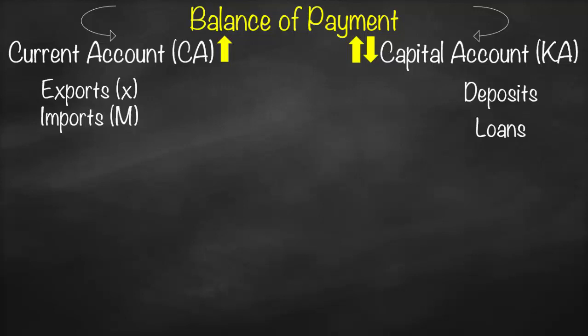Every time you put a deposit, you'll eventually take your money back — two-way, classified under capital account. But the interest you receive on that deposit is one-way, because you don't repay it back to the bank — so interest on a deposit appears under current account. The same logic applies to loans: the loan principal is two-way and goes under capital account, but the interest you pay on the loan is one-way and goes under current account.